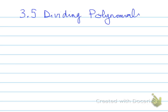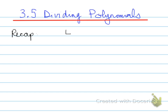Section 3.5, dividing polynomials. We're going to recap a little bit of long division that you may have learned a while back. You have to remember how to do long division. We're going to take the divisor and the dividend — taking 267 and dividing it by 4. What does that yield us using long division?